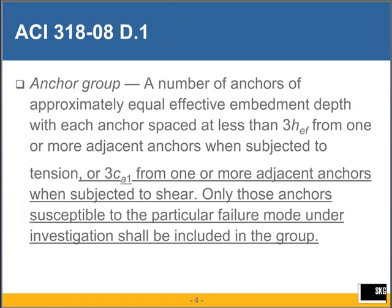The first item is a change in ACI 318-08, which is almost a correction. Anchor group was defined in 318-05 as a number of anchors with spacing at less than three times the embedment depth. That definition made a lot of sense for anchors in tension but did not make sense for anchors subject to shear. So for anchors subject to shear, a second part to the definition has been added in 318-08: a group is where the spacing does not exceed three times c sub a1, which is the edge distance in the direction of shear.